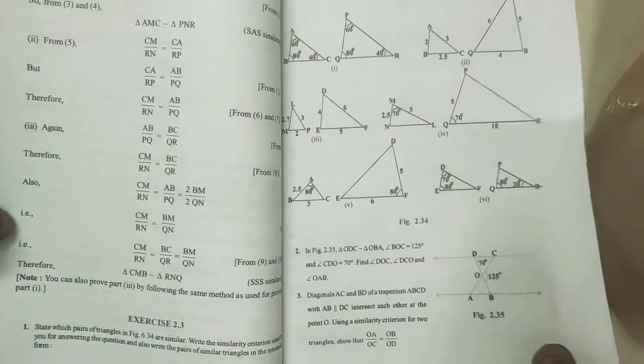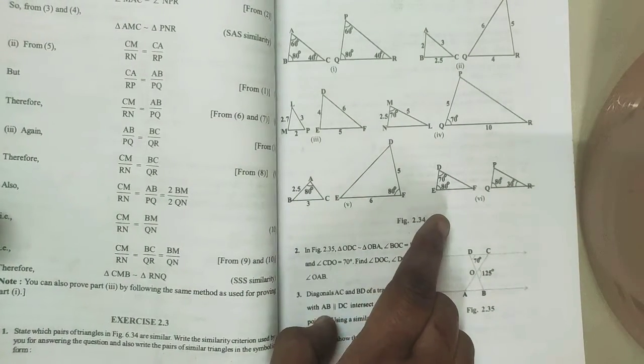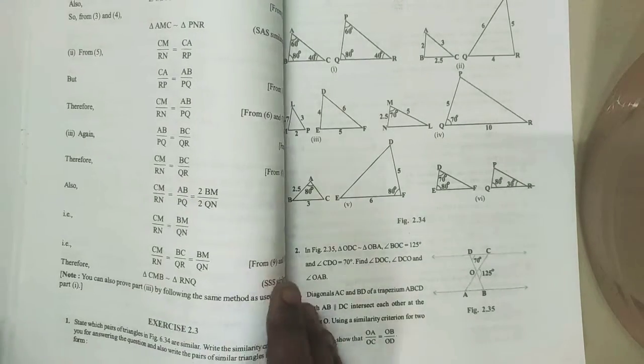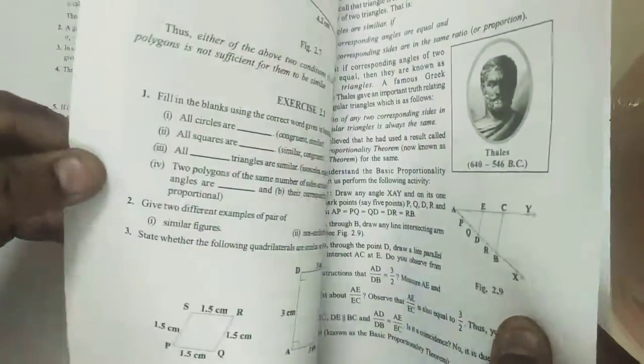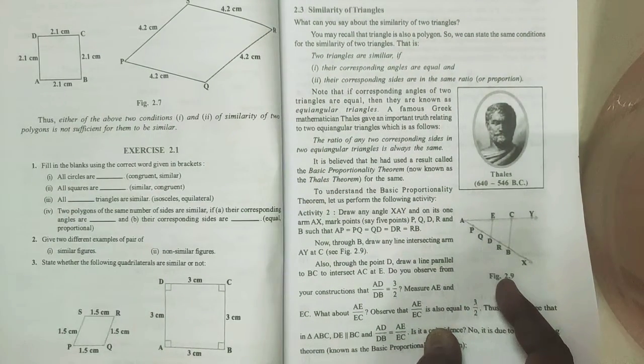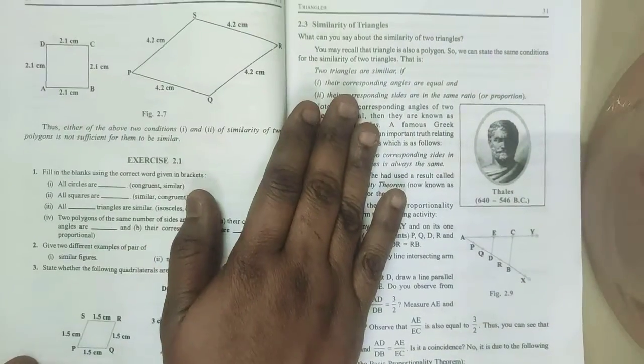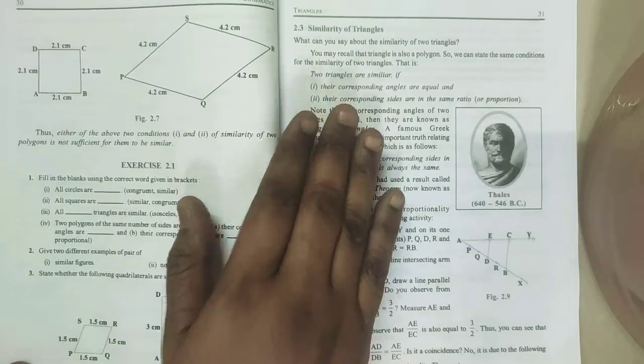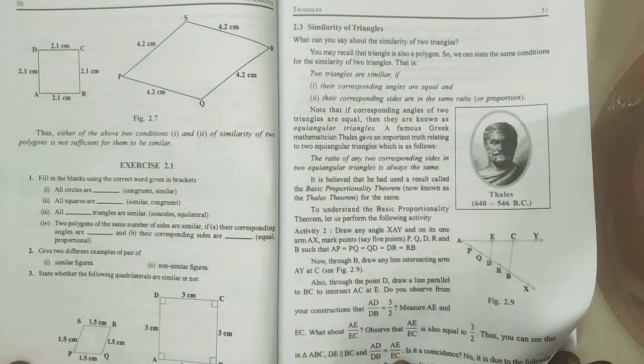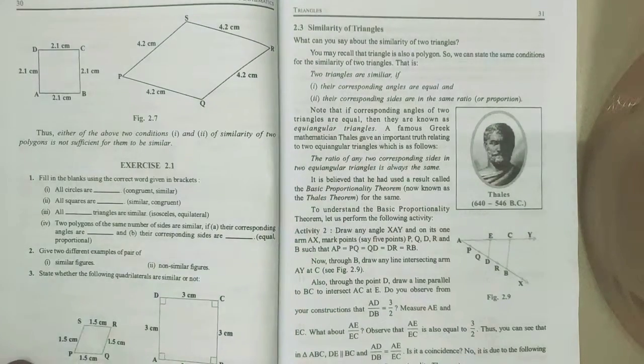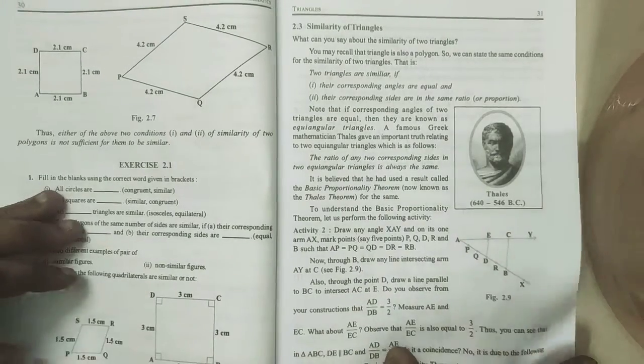Then in 2 mark question, 3 mark question, they might ask like this. They will ask you to state whether the two triangles are similar. So before starting this chapter, be thorough with these two points. In what condition the two triangles are similar? See here, this is the two conditions. Their corresponding angles are equal and their corresponding sides are in the same ratio. This is the two important points. Even this they will ask in 1 mark or 2 mark. What are the conditions for similarity of two triangles? If they ask such a question, you should write these two conditions.